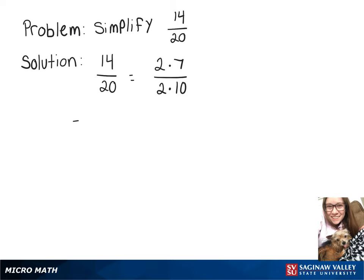Breaking that up, we can rewrite it as 2 over 2 times 7 over 10. And then since 2 over 2 is just 1, our final answer is 7 over 10.